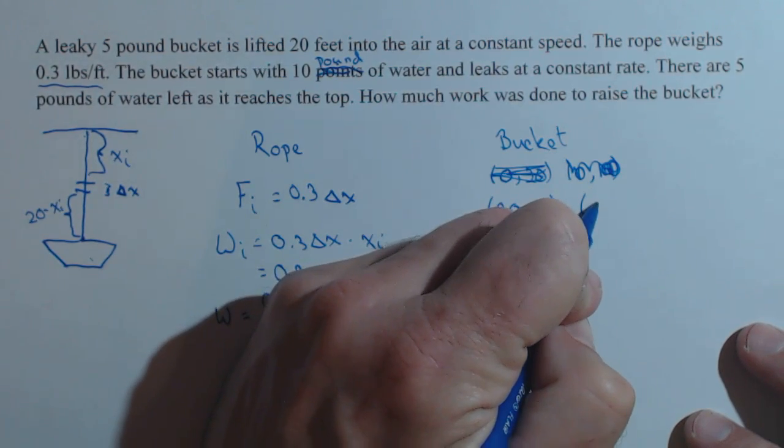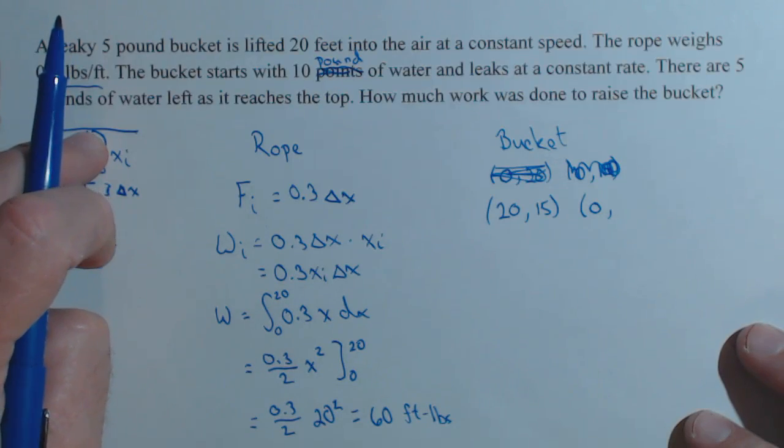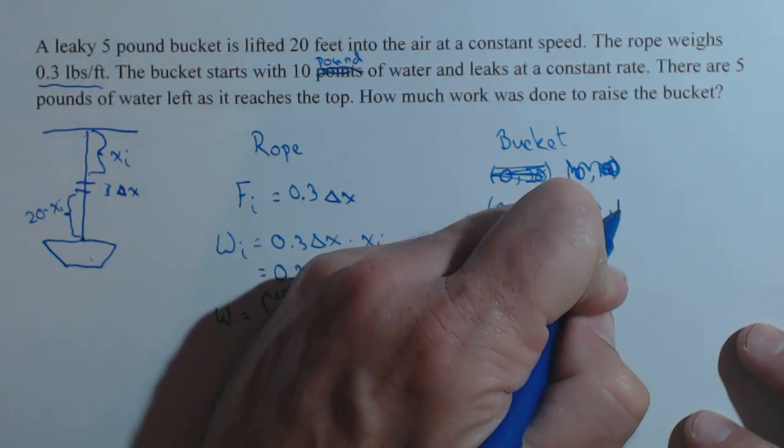Now, we also know that when we're at 0 feet, when this bucket's all the way at the top, the bucket's going to have lost 5 pounds of water, so it's going to be down to 10.